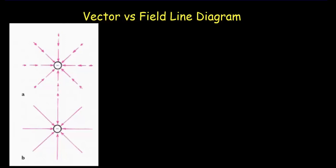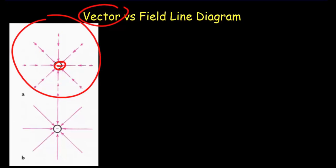Let's take the very simplest case — just a single negative charge. That would be a vector field representation. All you're doing is imagining bringing in a test charge. Let's say I put the test charge right here. It's a positive test charge, so it would be pulled towards that negative charge in the center with a certain force. The force per unit charge would be the size of the electric field.